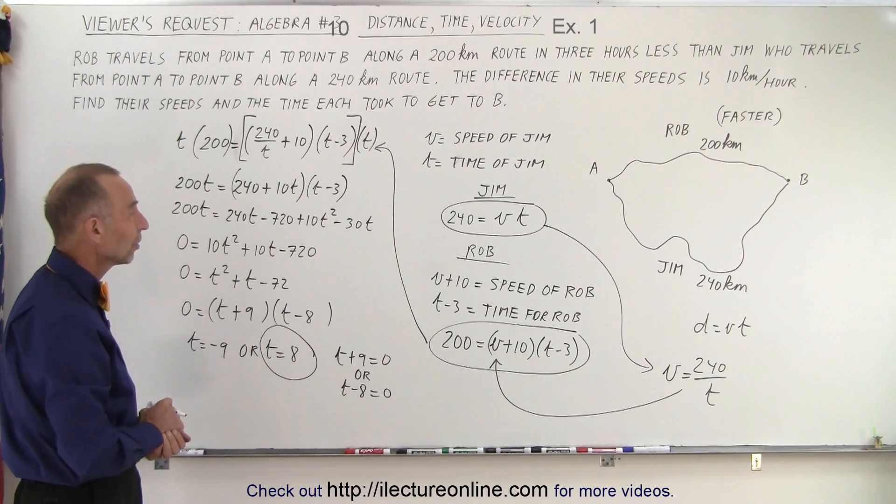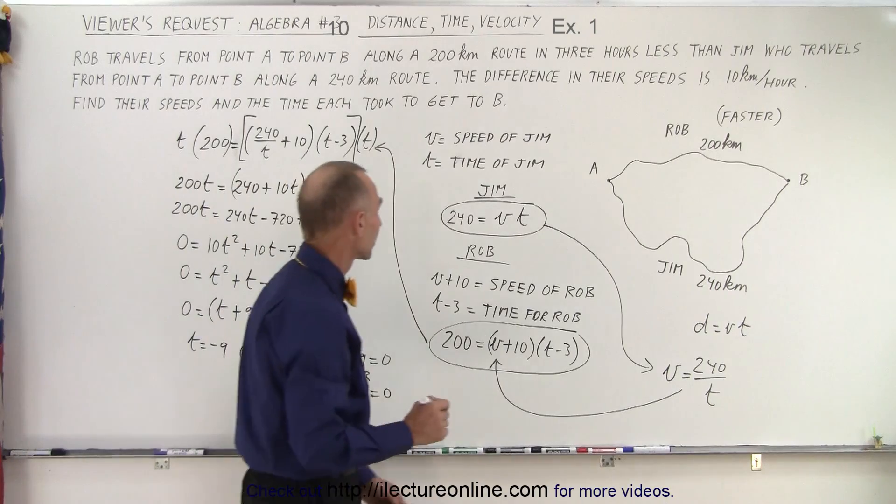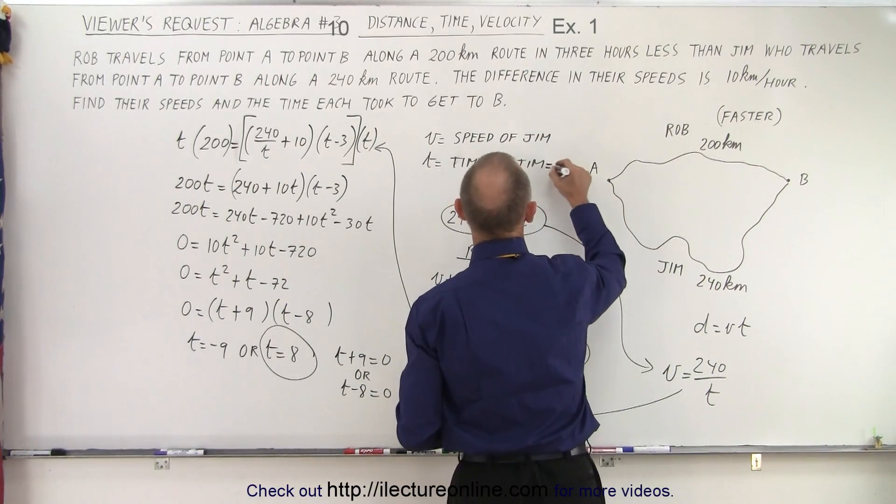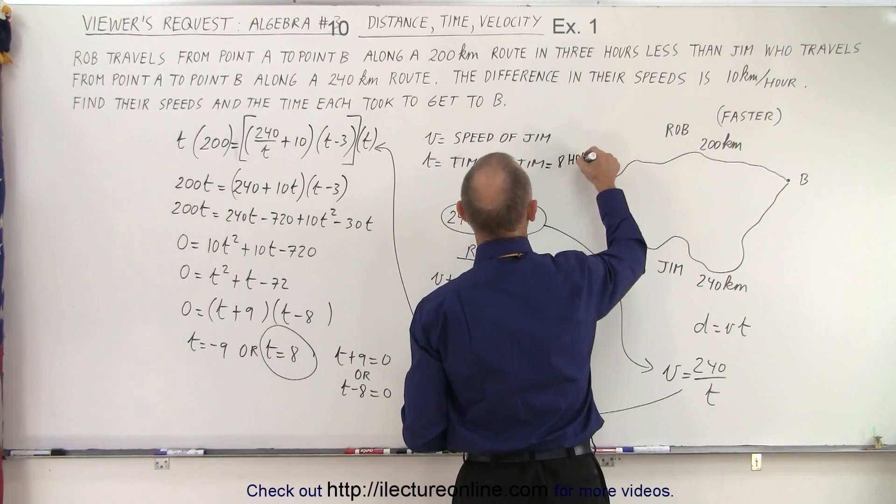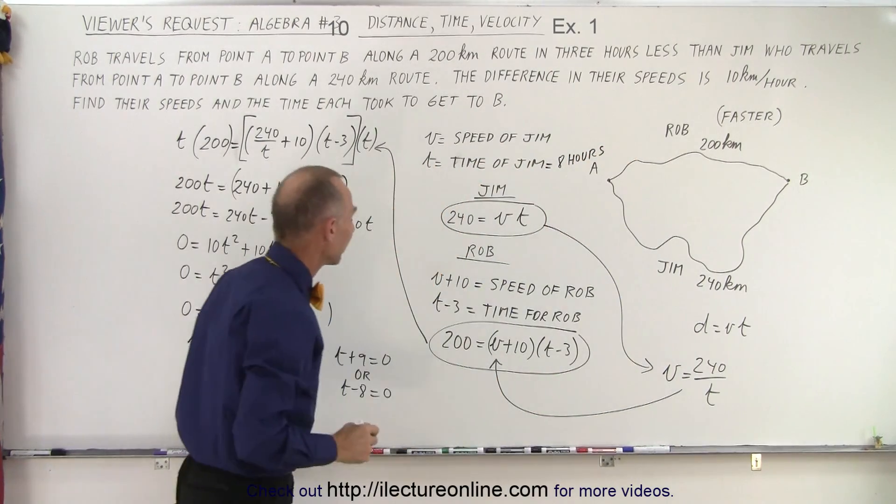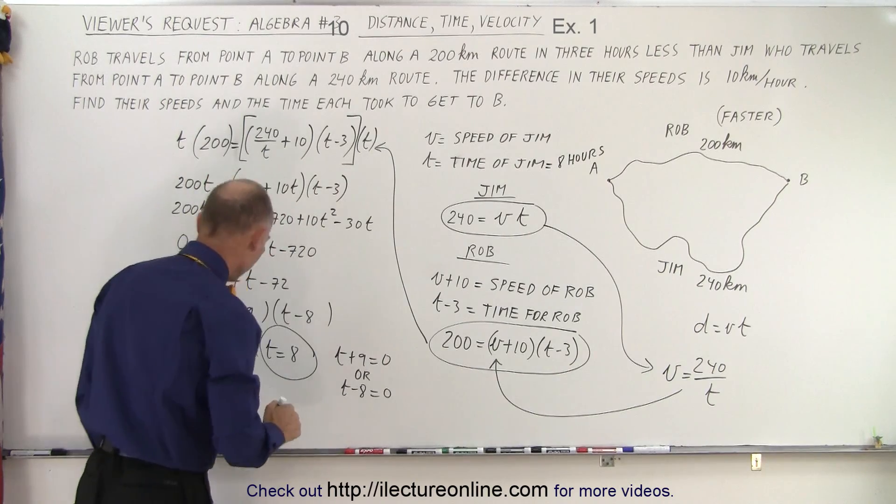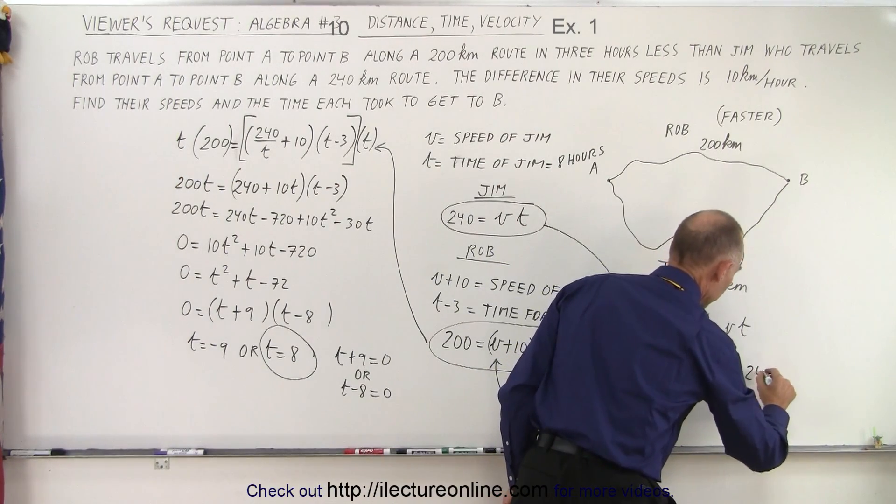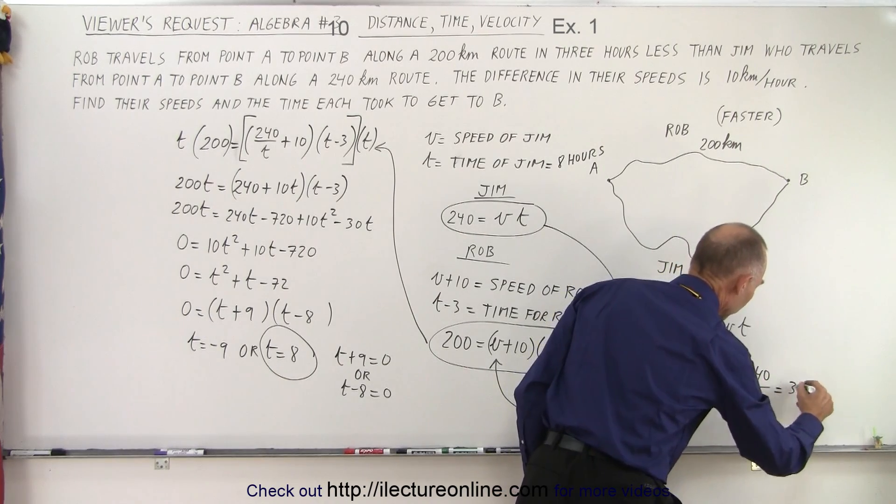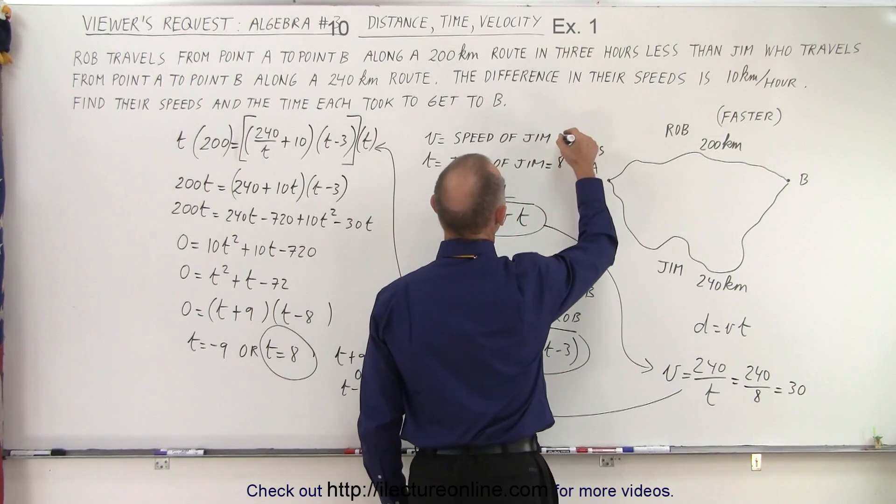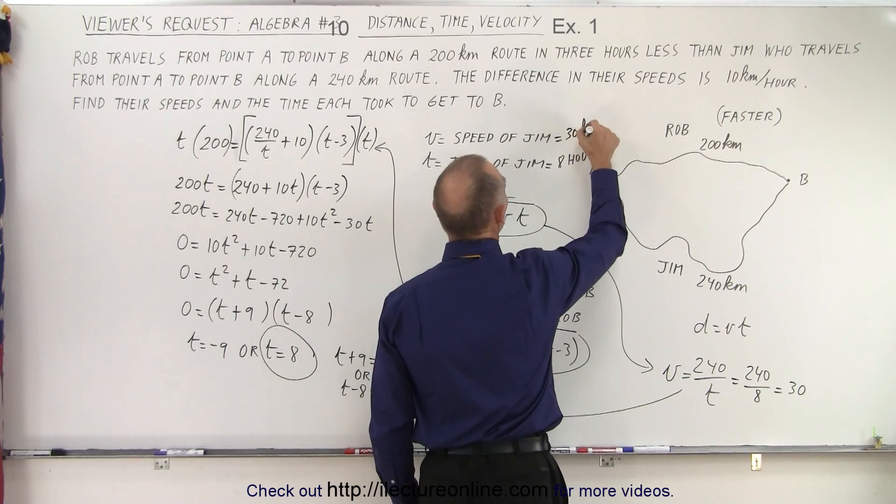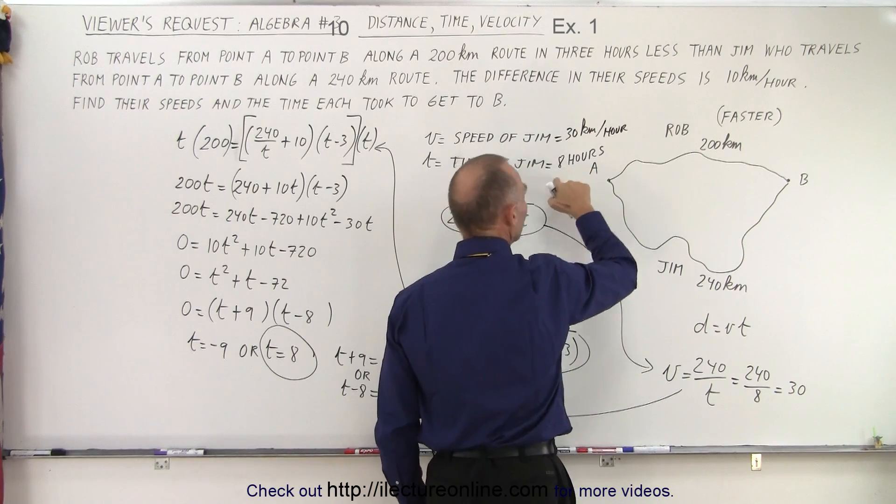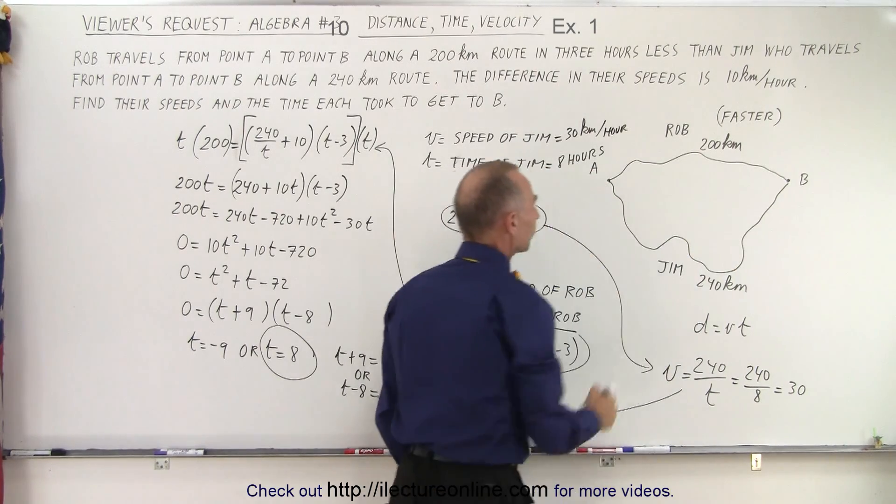So T must be eight, so now let's see if we can solve the problem. First of all T is the time of Jim so this is equal to eight hours. Jim will be on his way for eight hours and V can be found by taking 240 divided by eight which equals 30. That means the speed of Jim is equal to 30 kilometers per hour.